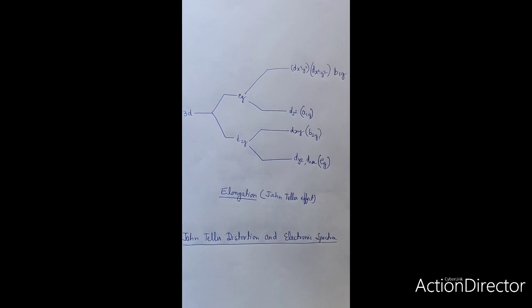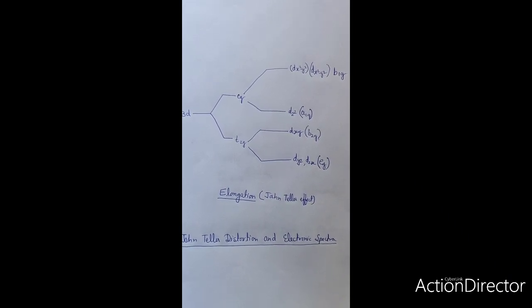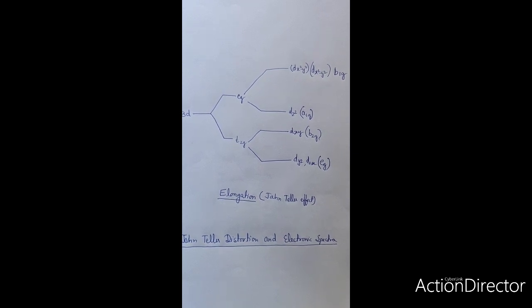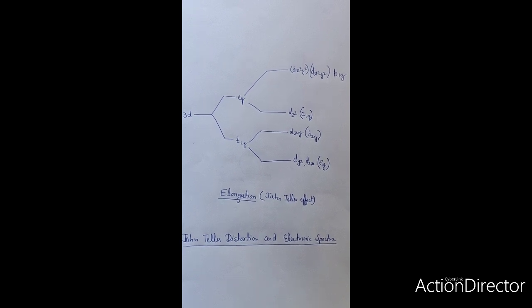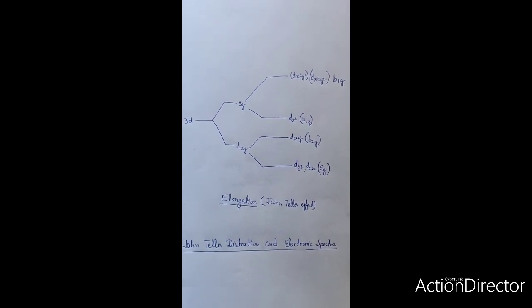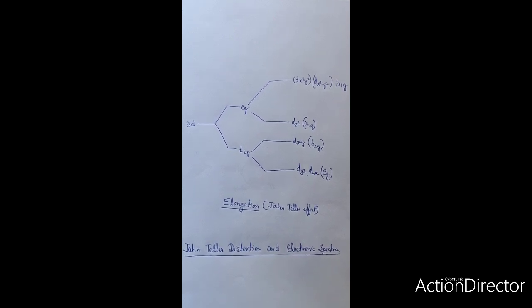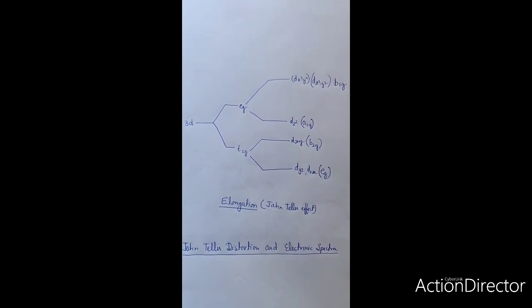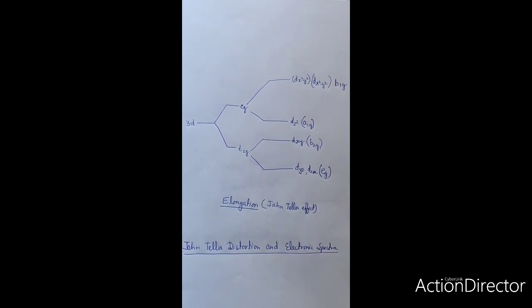The topic of this lecture is Jahn-Teller distortion and electronic spectrum — how Jahn-Teller distortion is going to affect the electronic spectrum. It affects generally the width of electronic spectra. Because of Jahn-Teller distortion, the width of spectra of electron transition elements is very broad.